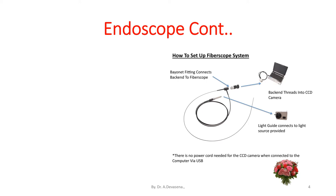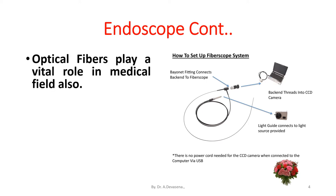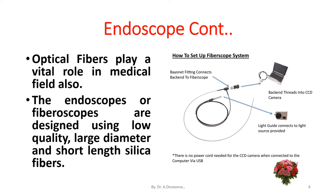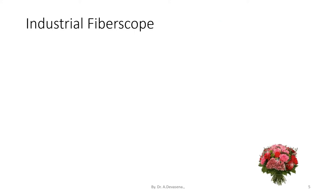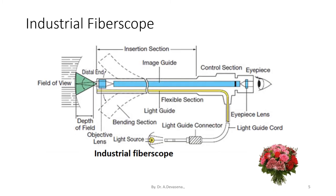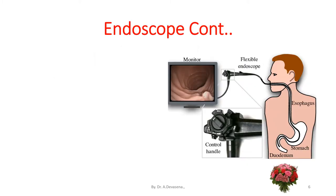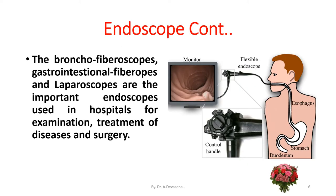Here is a representation of the fibroscope. Optical fibers play a vital role in the medical field. The endoscopy fibroscope is designed using low quality, large diameter and short length silica fibers. Here is a representation of the industrial fibroscope and its parts. The bronchial fibroscope, gastrointestinal fibroscope and laparoscopes are the important endoscopes used in hospitals for examination, treatment of diseases and surgery.